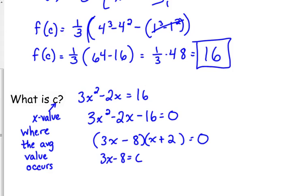x plus 2 is equal to 0. Negative 2 is not within our interval. So, our c value is 8 over 3. It occurs at 8/3, which is, what, 2 and a third.